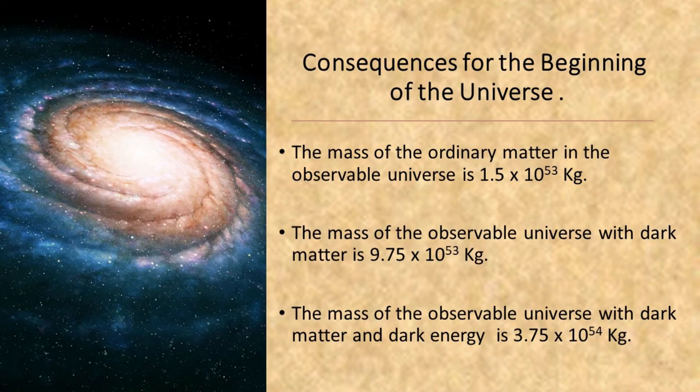The mass of the ordinary matter in the observable universe is about 1.5 times 10^53 kilograms. The mass of the observable universe with dark matter is 9.75 times 10^53 kilograms. The mass of the observable universe with dark matter and dark energy is 3.75 times 10^54 kilograms.